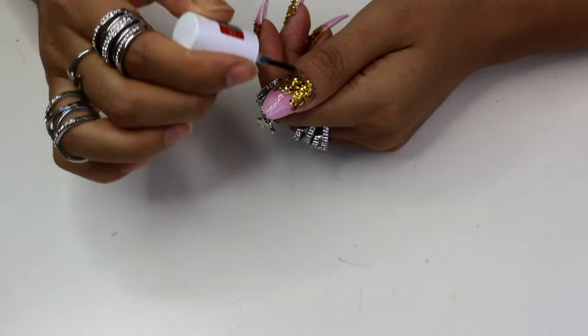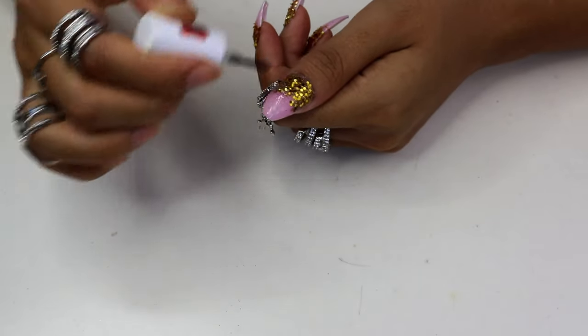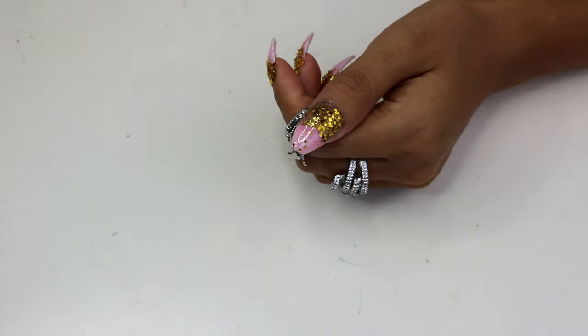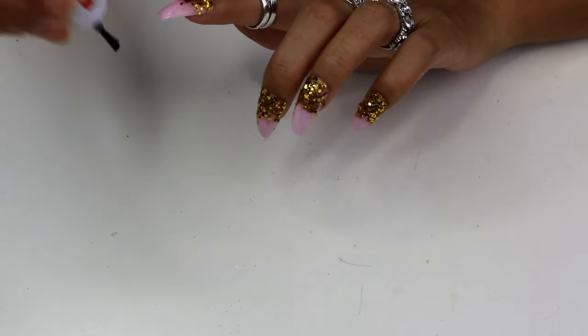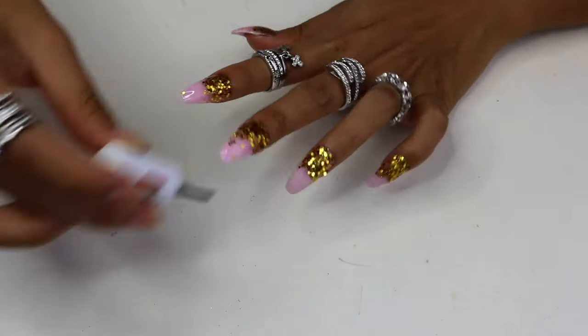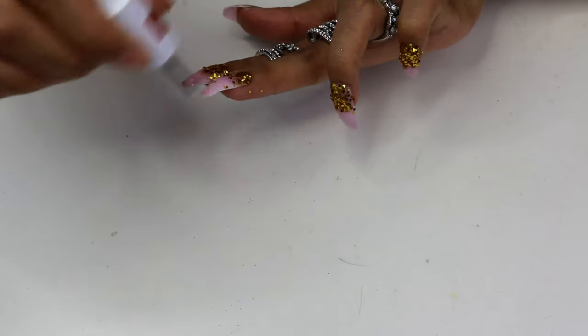Next I'm taking the top coat again, taking a good amount to make sure the glitters are covered with the top coat and don't come off later. So do the same to the rest of your nails and you're done.